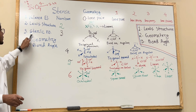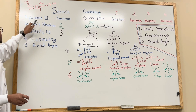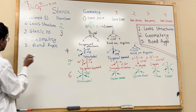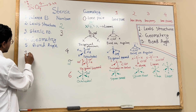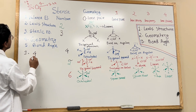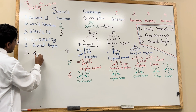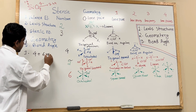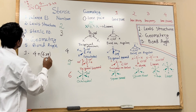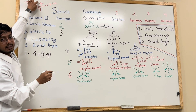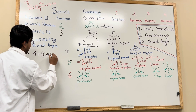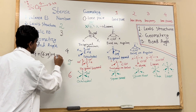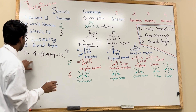First, to determine the Lewis structure, we need to find out the valence electrons. Silicon has 4 valence electrons, and oxygen has 6 multiplied by 4, giving 24. We already have a 4-minus extra charge, so we need to add 4 more. This gives a total of 32 valence electrons.